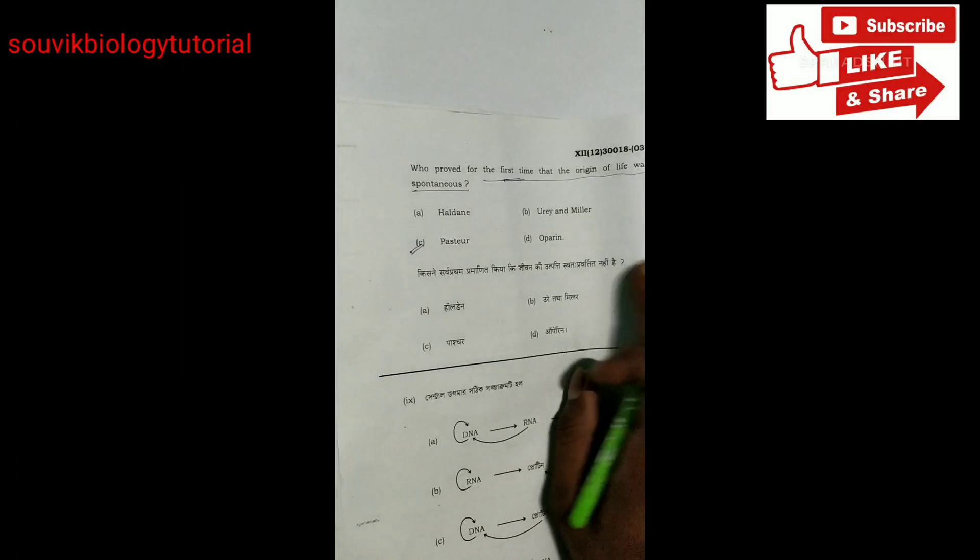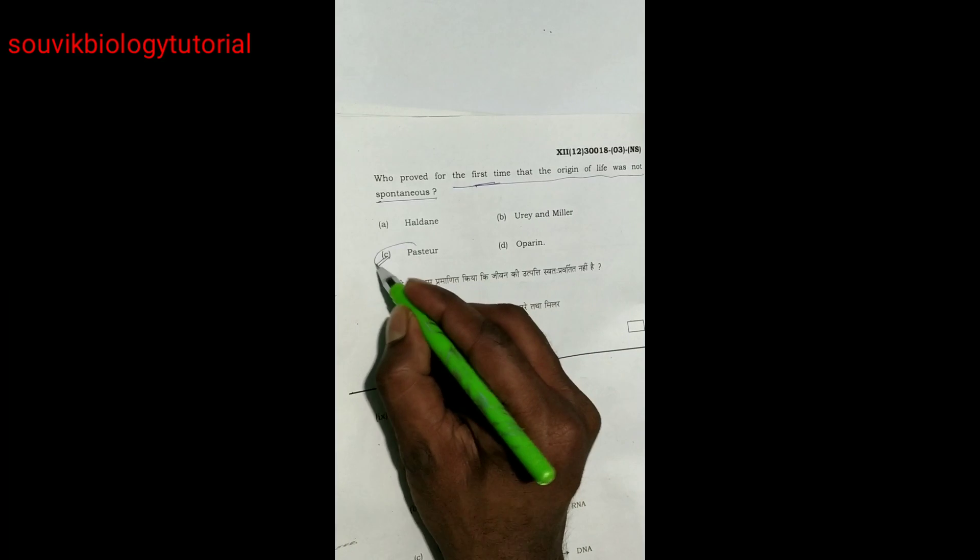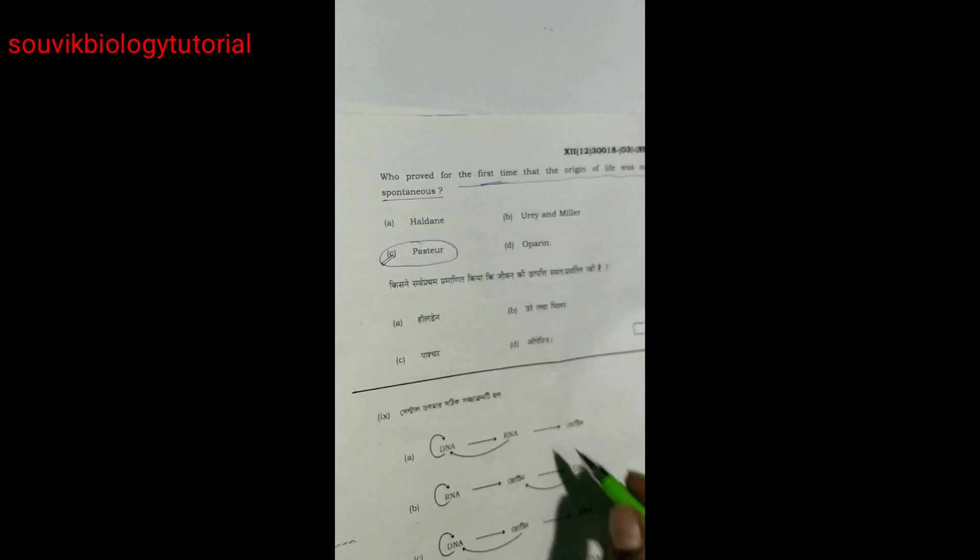Question number eight. Who proved the first time that origin of life was not spontaneous? Louis Pasteur.